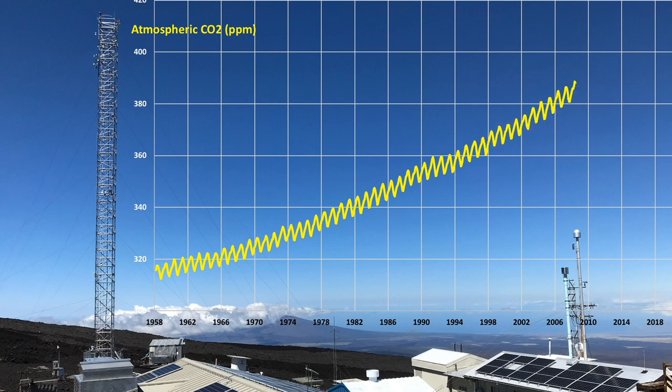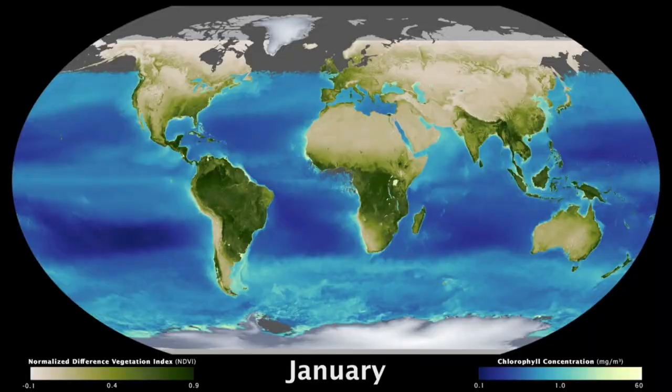Let's think about these two patterns. When we see the sawtooth pattern and it happens every year, that's a signal that we should be thinking about seasons. What seasonal events impact CO2 in the atmosphere?